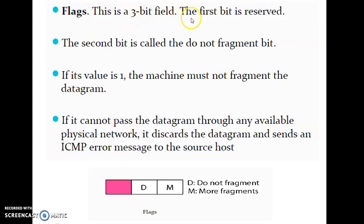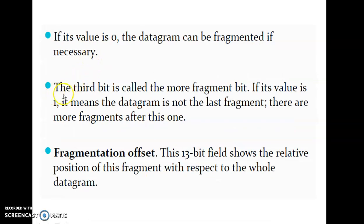The Flags field is a 3-bit field. The first bit is reserved. The second bit is DF (Do Not Fragment) — if its value is 1, the machine will not fragment the packet. The third bit is MF (More Fragments) — if its value is 1, it means the datagram is not the last fragment and more fragments follow. The MF bit helps the receiver judge whether it is the last fragment or more fragments are yet to be received. The Fragmentation Offset is a 13-bit field showing the relative position of a fragment with respect to the whole datagram — how far a fragment is from the original packet.